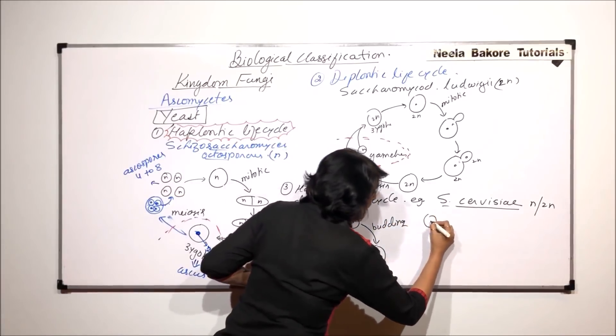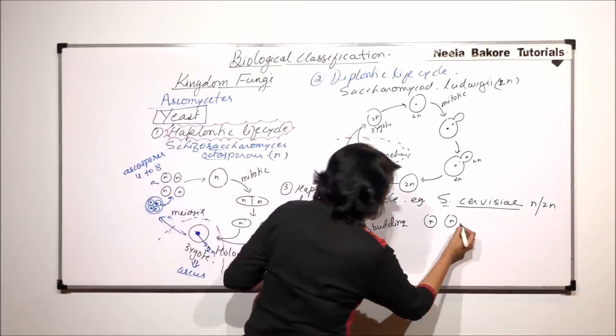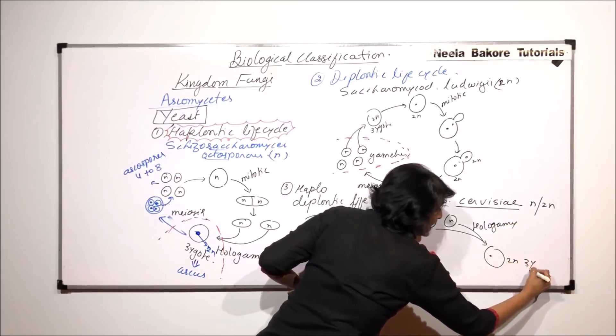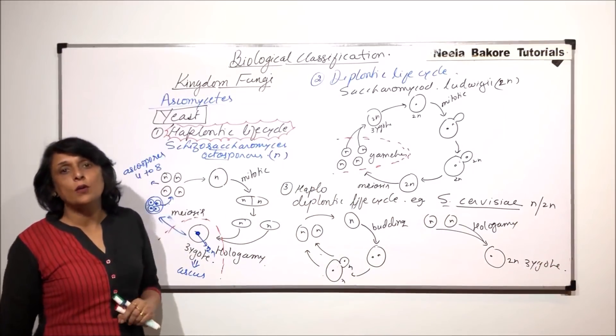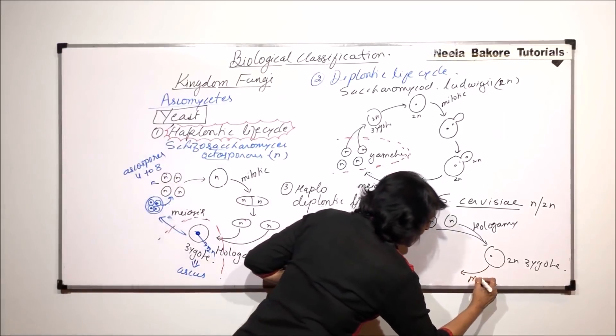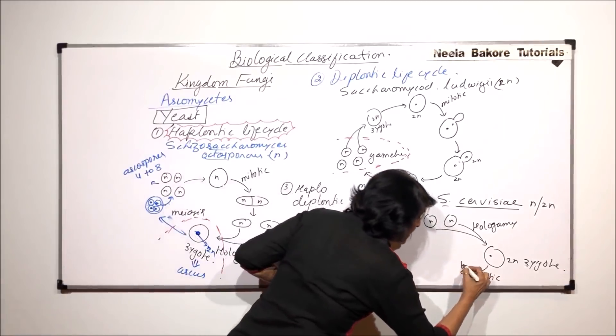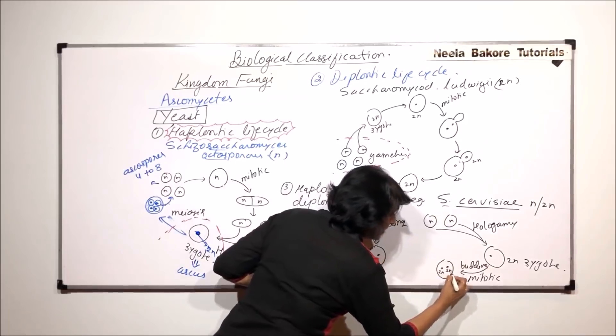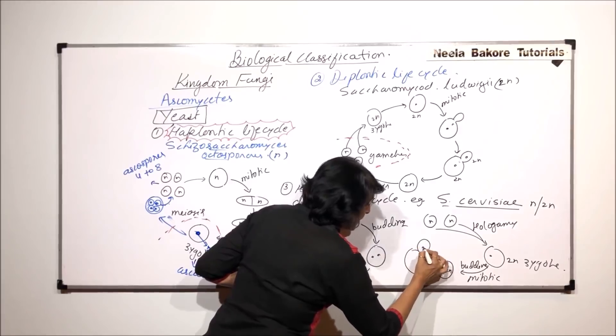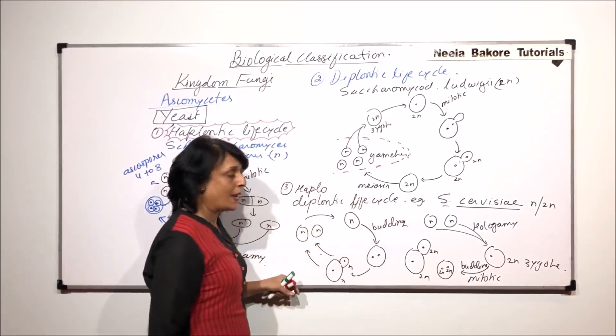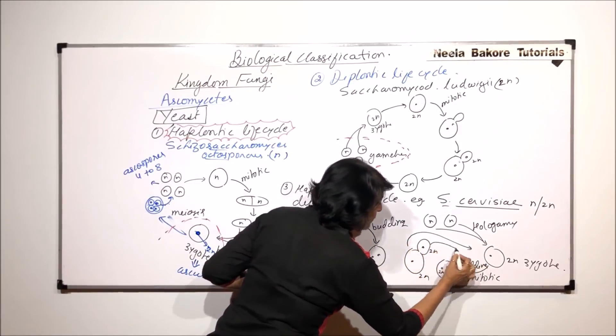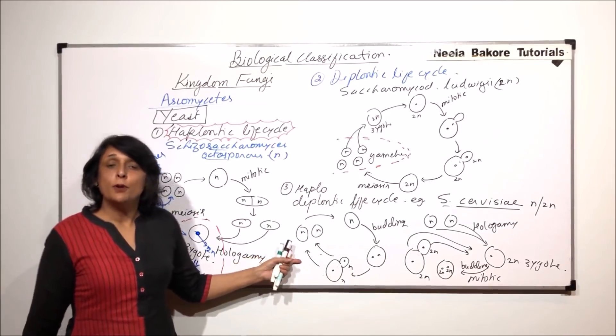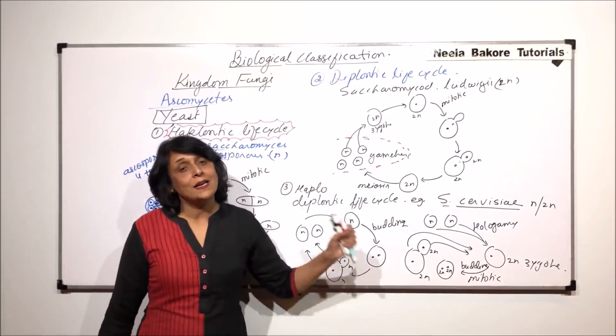Now if two haploid cells which are leading their life in the form of a normal cell, they fuse. That means hologamy is taking place to form a 2N zygote. But this zygote does not undergo meiosis. It reproduces by mitotic division and budding. Here the nucleus is going to divide mitotically. That means this nucleus is 2N, this is also 2N. A bud is formed. Now one nucleus migrates here. This is 2N, this is 2N. These two organisms, they start leading their life as diploid cells. A major part is diploid, a major or a half part is haploid. They reproduce by budding as haploid cells also. They reproduce by budding as diploid cells also.